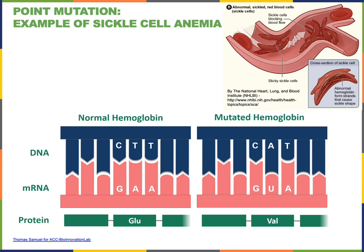Sickle cell anemia is an example of a point mutation that is a non-conservative missense mutation. The change in the DNA sequence of a codon from CTT to CAT results in a change in the codon of the messenger RNA from GAA to GUA. GAA codes for the amino acid glutamate, which is a polar amino acid, whereas GUA codes for the amino acid valine, which is a non-polar hydrophobic amino acid.